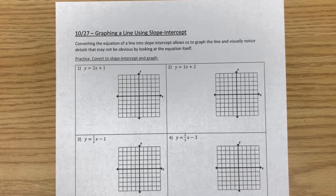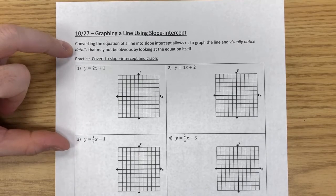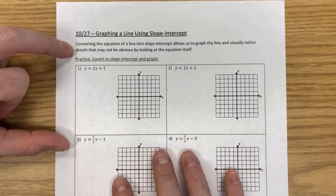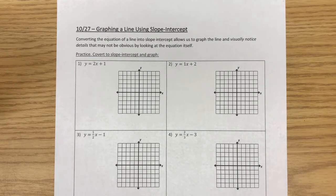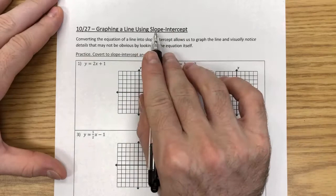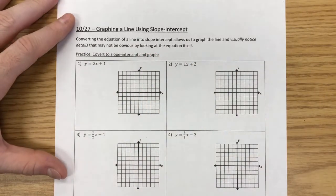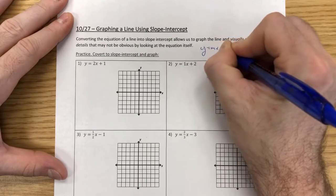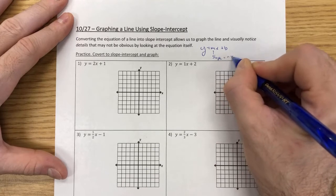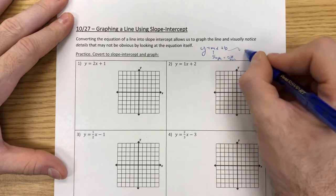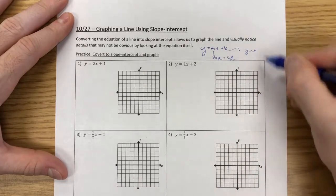Today we're going to be graphing a line using slope-intercept form. Converting the equation into slope-intercept lets us visually notice what's going on with the equation itself. Graphing isn't necessarily the most useful mathematical tool, but it gives us mathematical insight to see what's going on and maybe check our work elsewhere. We're going to graph in y equals mx plus b format, where m is the slope — rise over run — and b is the y-intercept, where it crosses the vertical axis.